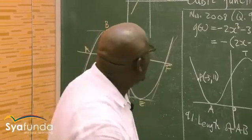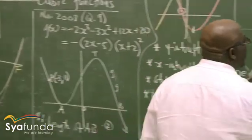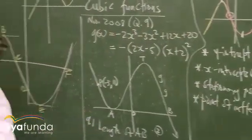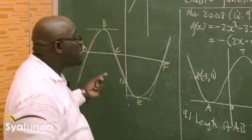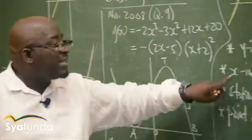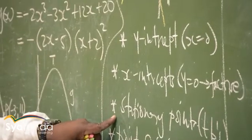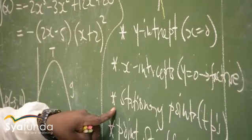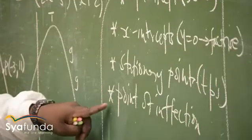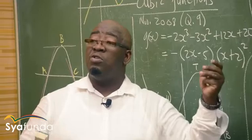Now let us look at the exam question. This was taken from November 2008, question 9. Here is the skeleton: number one, the y-intercept — let x equal zero. Number two, the x-intercepts — let y equal zero, then factorize. Number three, stationary points — let the derivative equal to zero, then factorize, getting two values of x, then substitute to find corresponding y values. Number four, point of inflection — find the second derivative. All questions will refer to this skeleton.